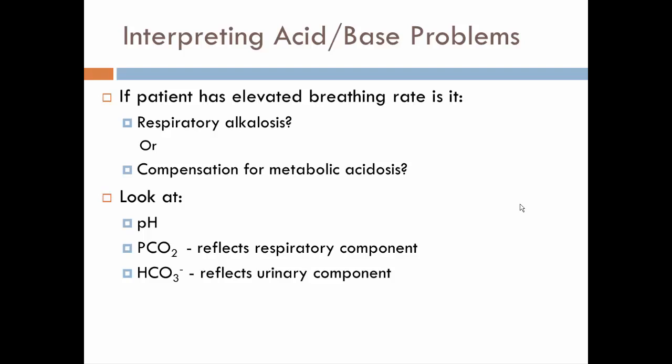To determine what imbalance a patient has, we need more than just their breathing rate. For example, a patient breathing heavily could have respiratory alkalosis from hyperventilation, or could be compensating for metabolic acidosis by hyperventilating to blow off CO2. To figure it out, we look at pH, the partial pressure of CO2 — reflecting the respiratory component — and bicarbonate levels, reflecting the renal and metabolic component.